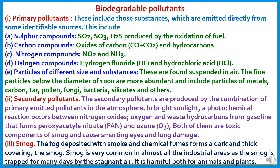The second type is secondary pollutants, produced by the combination of primary emitted pollutants in the atmosphere. In bright sunlight, a photochemical reaction occurs between nitrogen oxides, oxygen, and waste hydrocarbons from gasoline, forming peroxyacetyl nitrate (PAN) and ozone — both toxic components of smog that cause smarting eyes and lung damage. The third type is smog: fog deposited with smoke and chemical fumes forms a dark, thick covering. Smog is common in industrial areas and is harmful to both animals and plants.